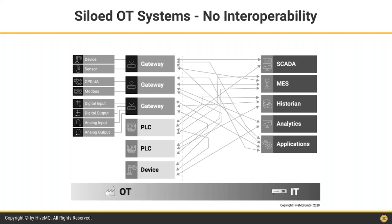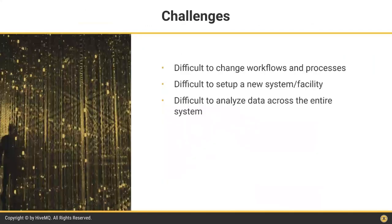In the past this was not a huge deal, but today things move so fast: new applications need to be deployed very often, new data sources introduced. The challenges of current architectures include difficulty changing workflows and processes, difficulty setting up new systems and facilities, and difficulty analyzing data across the entire system. It gets really complicated when multiple sites are involved and you want a centralized view of data across all factories worldwide.